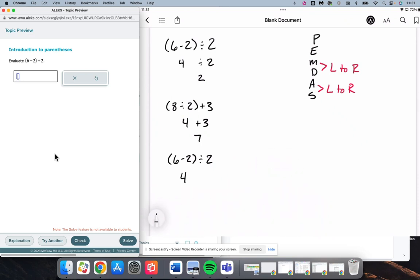So 6 minus 2 is going to make a 4. 4 divided by 2 is 2. That's actually the same exact problem that we got on the first one, so we're going to get rid of it. Keep getting repeats on Alex.